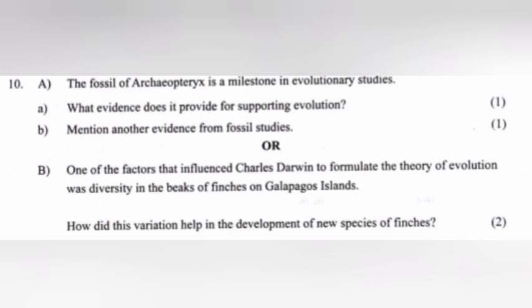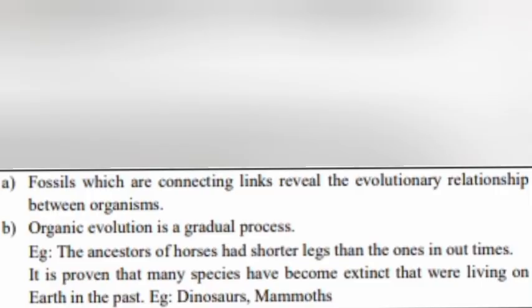Question 10, Part A: The fossil of Archaeopteryx is a milestone in evolutionary studies. What evidence does it provide for supporting evolution? Answer: Fossils which are connecting links reveal the evolutionary relationship between organisms. Part B: Mention another evidence from fossil studies. Answer: Organic evolution is a gradual process — for example, the ancestors of horses had shorter legs than those of today. It is also proven that many species, such as dinosaurs and mammoths, have become extinct.